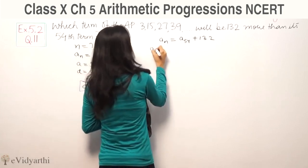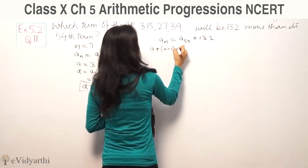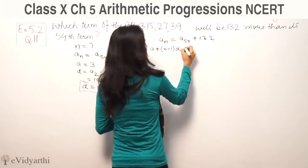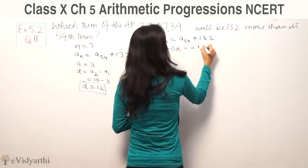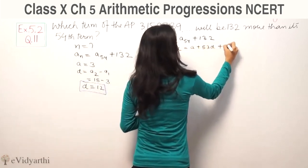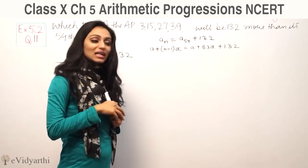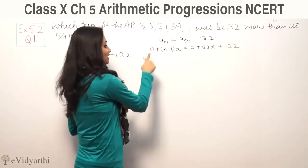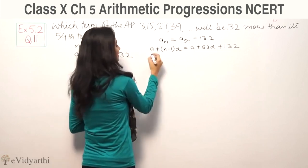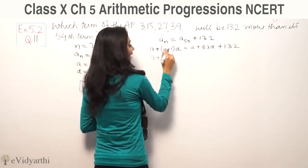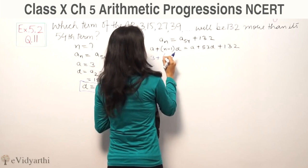An can be written as a plus n minus 1 times d. So substituting values, we have 3 plus n minus 1 times 12.